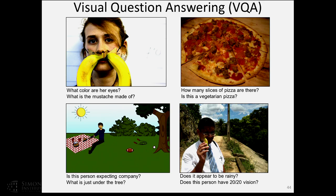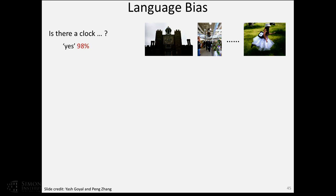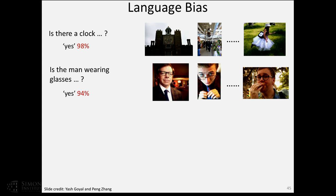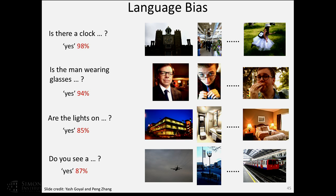State of the art about a year and a half ago was at about 55–56 percent. Today it's at 68 percent, and inter-human agreement is at about 83 percent. But one issue in a lot of VQA settings is heavy language bias. For many datasets, if you ask 'is there a clock?' and just say yes, you'll be right 98 percent of the time. 'Is the man wearing glasses?' — just say yes, you'll be right 94 percent. 'Are the lights on?' — yes, you'll be right 85 percent. 'Do you see a...?' — don't even listen to the rest, just say yes and you'll be right 87 percent of the time.